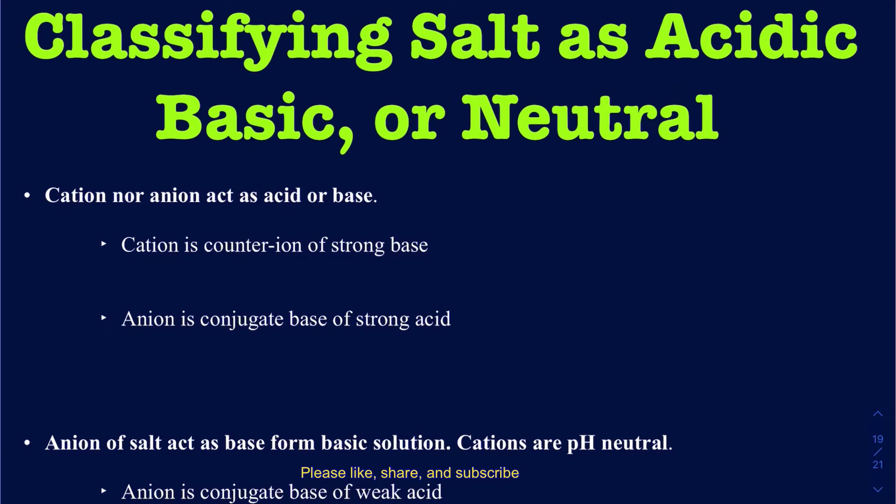The bottom line is you're going to have to look at your cation and your anion one by one in order to figure out if the cation is capable of making an acidic solution or if the anion is capable of making a basic solution. If both cannot make an acidic or basic solution, then your overall solution is going to be neutral. If the cation is making an acidic solution, it would be acidic. If the anion is making a basic solution, it would be basic. Let's look at some of these rules.